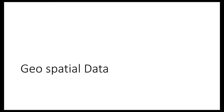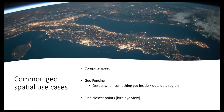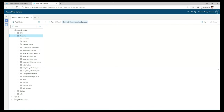Now let's look at geospatial data — another tool in the belt for operational data, since lots of operational data contains geospatial coordinates. Common use cases include computing speed from GPS position over time, geofencing to detect when an object enters or leaves a zone, and finding the closest point. You can use rectangles, polygons, and various functions. Let's use the well-known New York City taxi dataset and look at the Trips table — 1.5 billion rows, about 400 gigabytes on disk after compression.